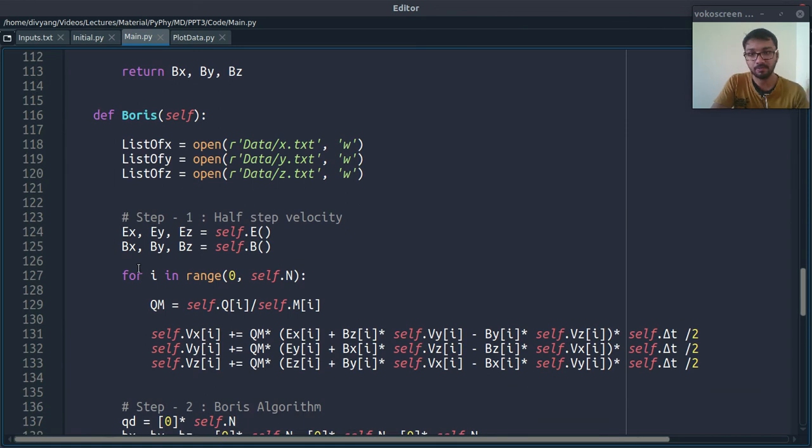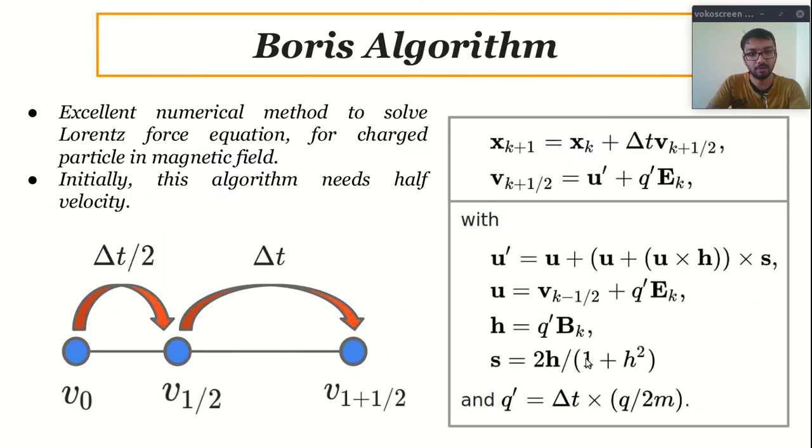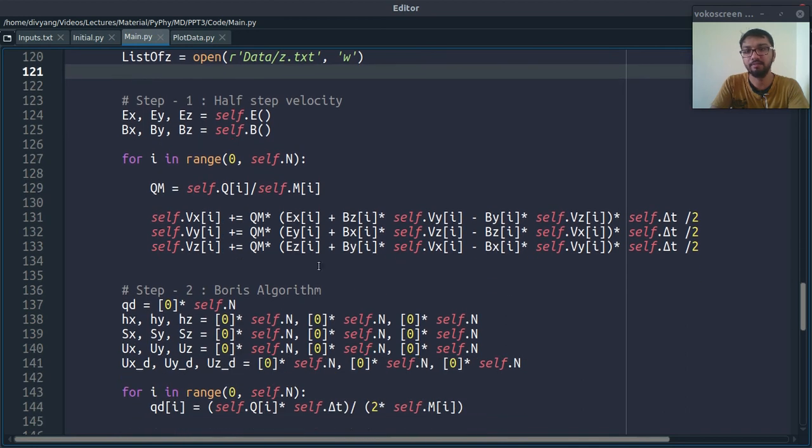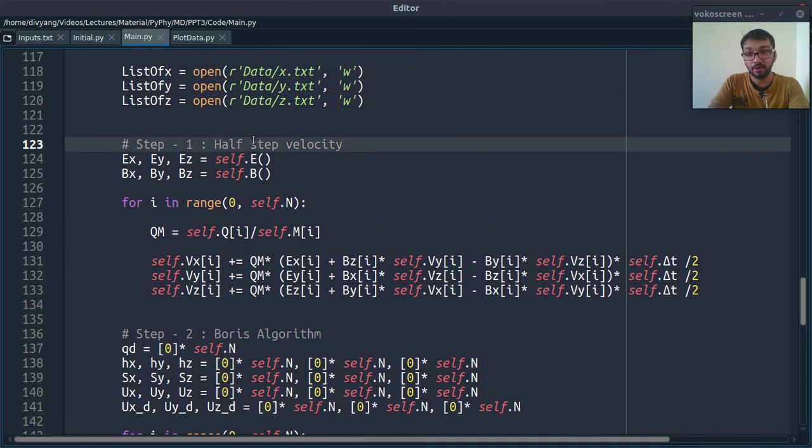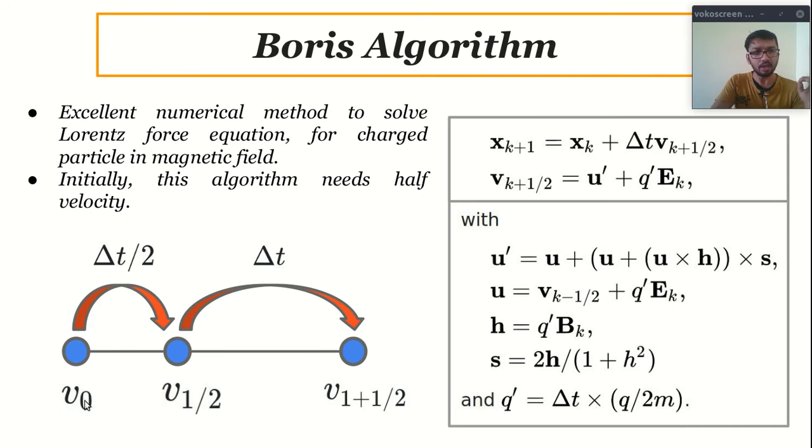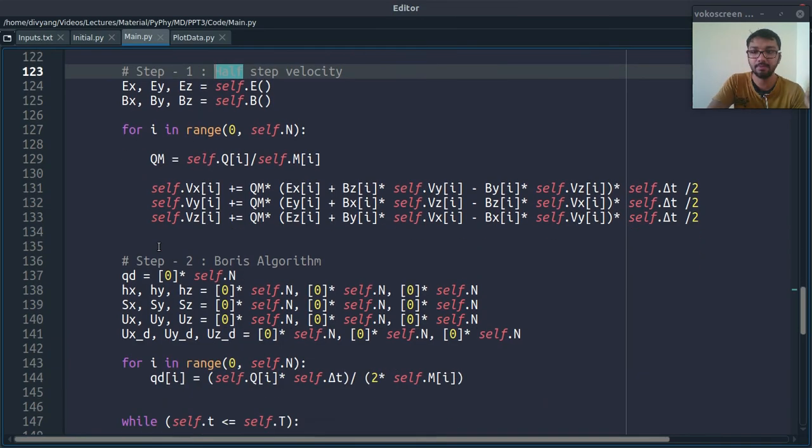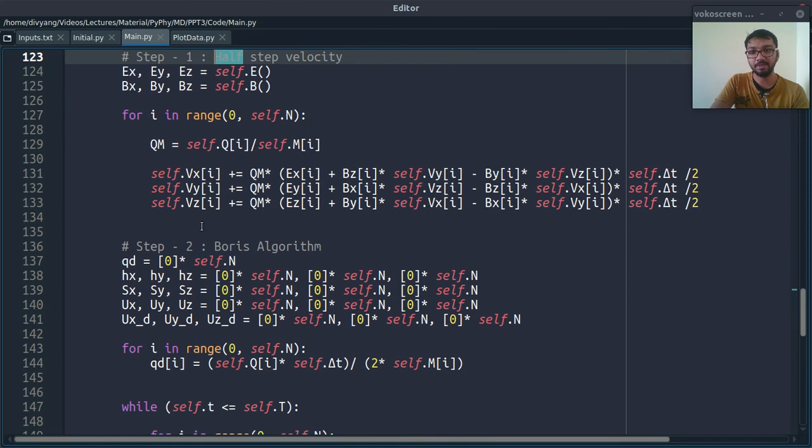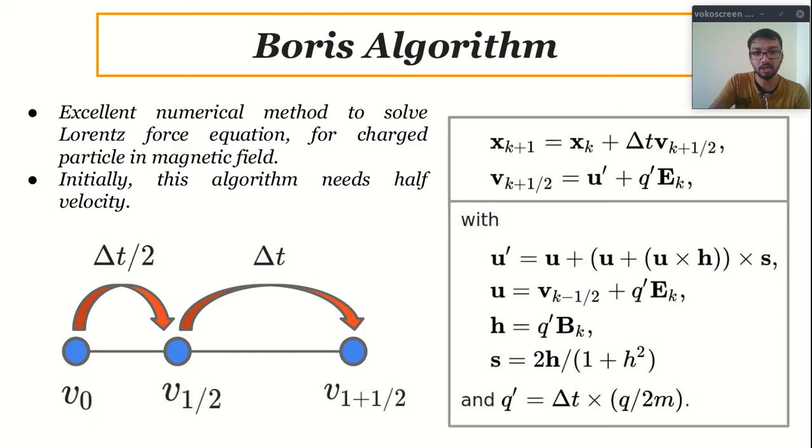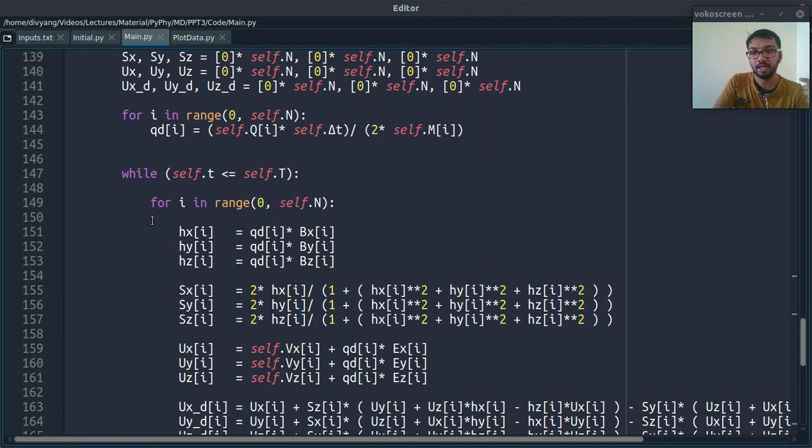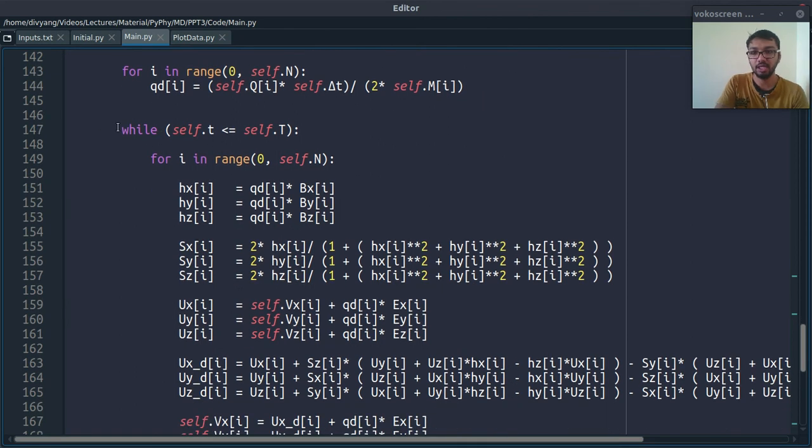Now comes the core part, Boris algorithm. This is the actual solver. So, these are the equations which I have written here. As you can see here, in first part or first step, I am calculating half step velocity. As I said, this is the first step in Boris algorithm, as it requires initialization. After you calculate this half step thing, we code these iterative equations.